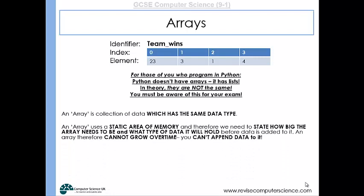An array uses a static area of memory. Whenever we set up an array, we have to state how big the array needs to be and what type of data it's going to hold so that the computer can prepare the right amount of memory for it. Therefore, an array can't grow over time. You can't append to it. You can change what's in the array—if it had the number 7 in index 2, you could change that to a different number. But you can't add more numbers to the end of it. It can't grow. It's static.